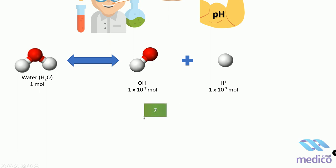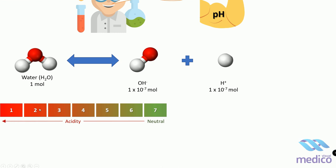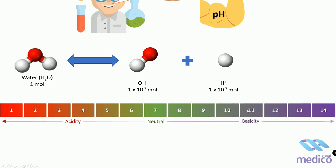So 7 is considered as a neutral pH. Solutions having pH less than 7 are considered acidic because they have more concentration of free protons. The solutions having pH more than 7 are considered basic.